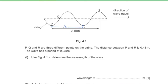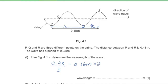The distance from one trough to the next trough is one full wavelength. From one trough to one crest is half a wavelength. The distance P to R covers 1.5 wavelengths, so wavelength = 0.48 / 3 = 0.16 m for half a wavelength, and the full wavelength = 0.16 × 2 = 0.32 m.